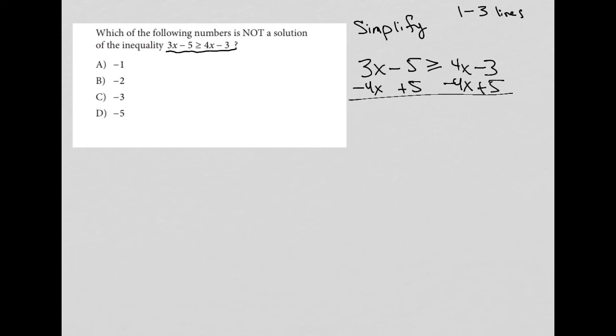So I get my x's on the left. In this case, I have negative x. This is now gone. This is greater than or equal to. This is now gone. And then negative 3 plus 5 is positive 2.